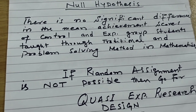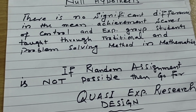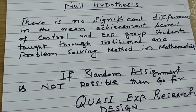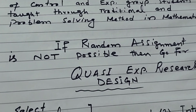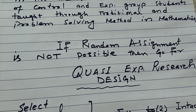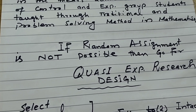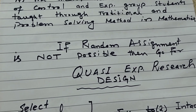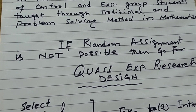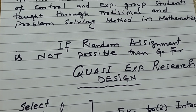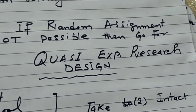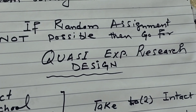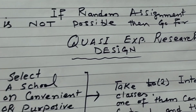There are two methods and we have to compare which method is more effective. If you have a situation where random assignment is possible, you can have a control and experimental group. If random assignment is not possible, then we will opt for the quasi-experimental research design.